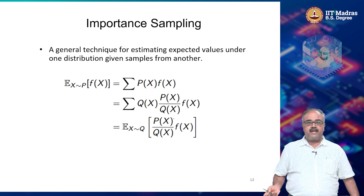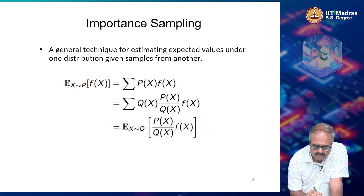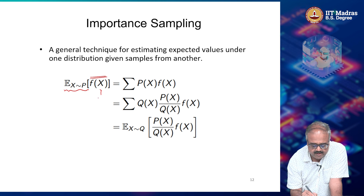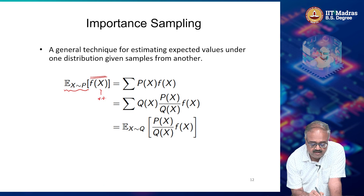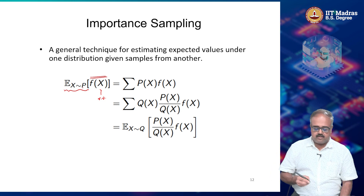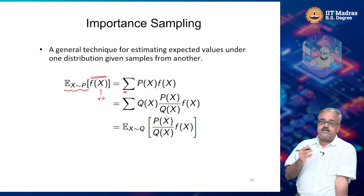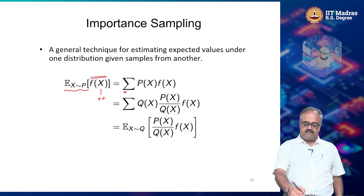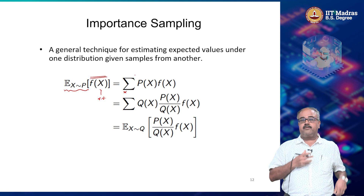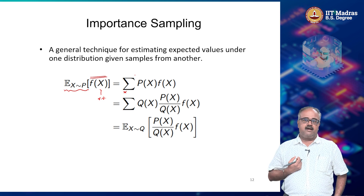Now let us look at the simple idea behind importance sampling. Importance sampling is a technique where I want to compute some statistics — for example, the expectation of f(x), where x is a random variable distributed according to p. This equals the summation over all possible x of p(x) times f(x). But it turns out I cannot sample according to p to compute this expectation — I can only sample according to q.